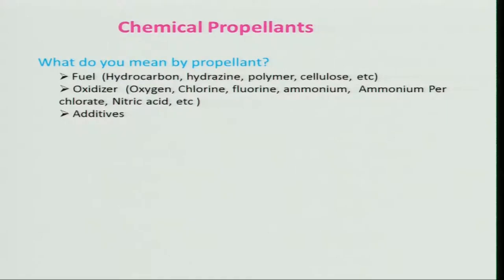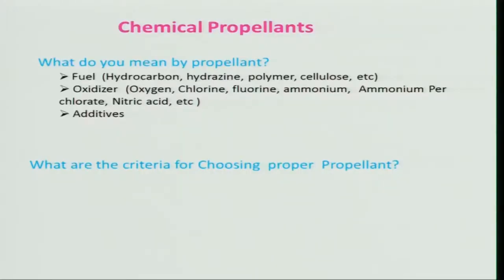Before getting into the constituents and additives, let us look at the properties of a propellant that help us choose it. A propellant must have a higher heat of combustion to get a high heat release rate, because the amount of heat released per unit volume in a rocket engine is much higher compared to a burner or even a gas turbine engine. So it is very important to have a high calorific value.